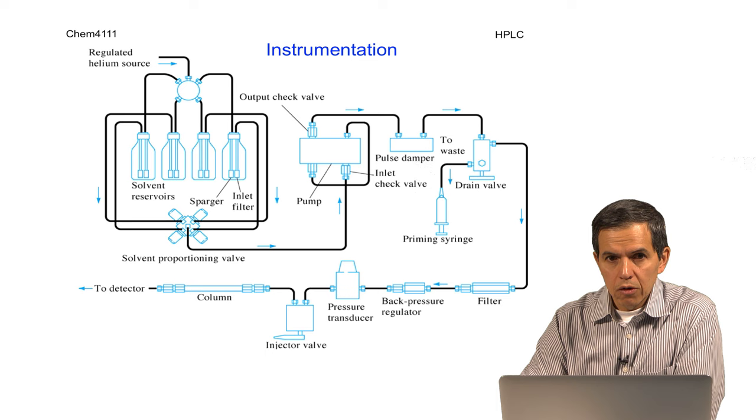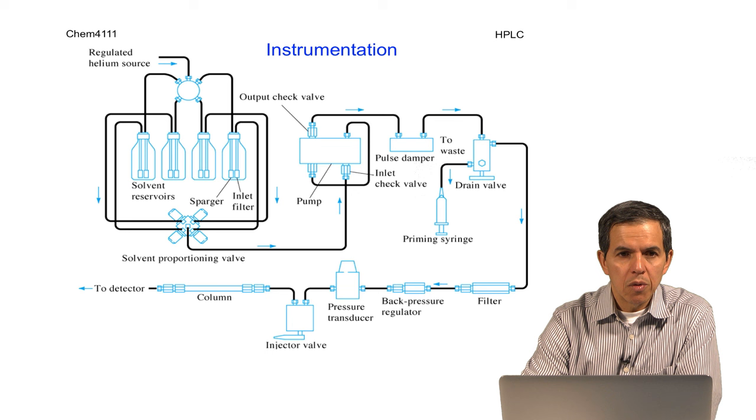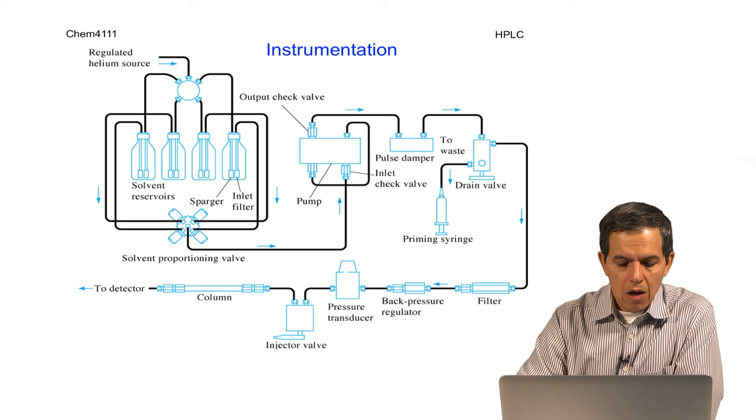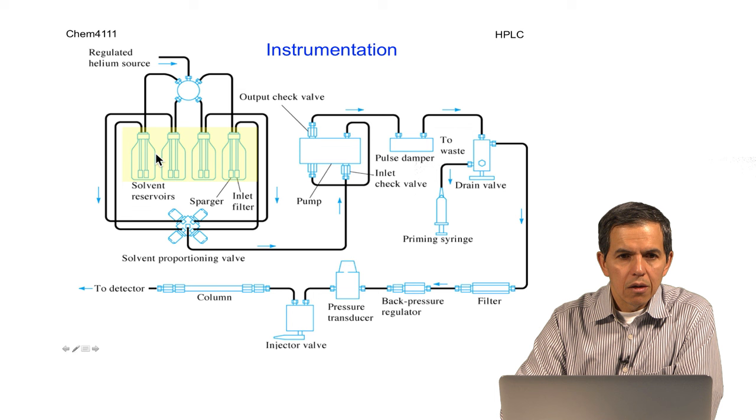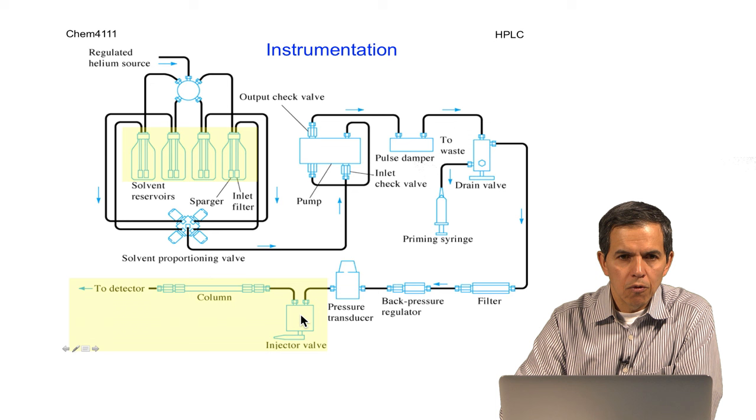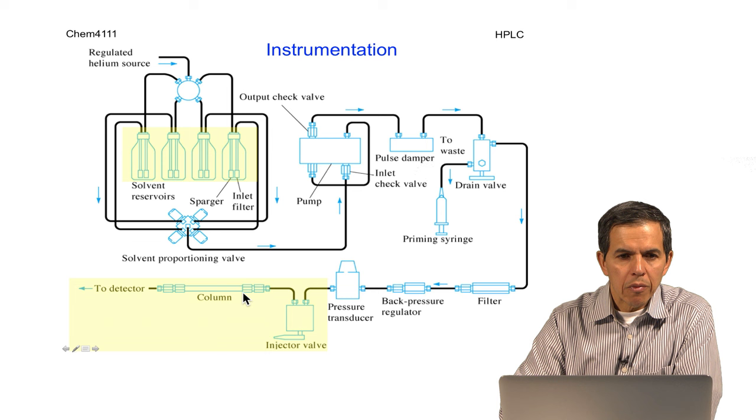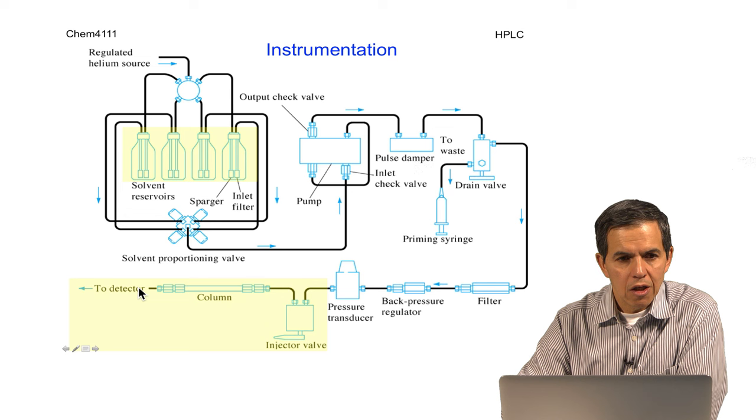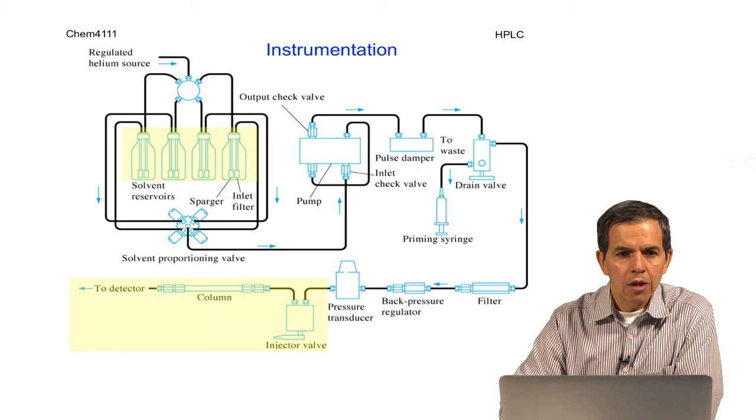In order to do an experiment, either an isocratic or a gradient separation by HPLC, the instrumentation is going to be relatively basic and simple. It's important to have different solvents, a way to deliver the solvents through a pumping system, a region or way to introduce the sample—which for HPLC are liquid—and finally the column for the separation that ultimately delivers the sample to the detector. The detector that will be used in this experiment is a UV detector. This detector is universal and can be used in almost any of the applications in which HPLC is currently used.